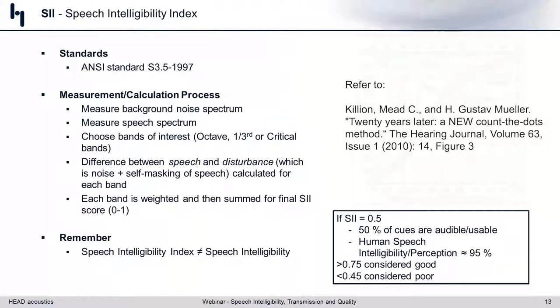You look at the differences between the speech and the disturbance — not just noise, because disturbance also includes self-masking effects of speech. This goes beyond a simple SNR comparison; there's actually an element of psychoacoustics and masking effects. Then you weight each band and sum it for a final SII number between 0 and 1. As I mentioned, the index doesn't equate to intelligibility. In the top right-hand corner is a chart from one of Mead Killion's articles — he's a very famous acoustician in the hearing health industry.